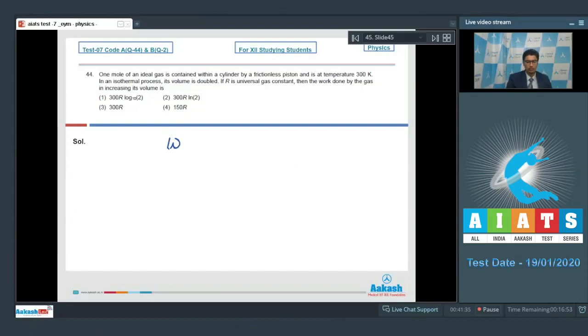Dear students, in an isothermal process, the work done is equal to nRT ln V final by V initial, where V represents the volume. Herein, the number of moles is 1 multiplied by R and T, which is 300 Kelvin into ln.